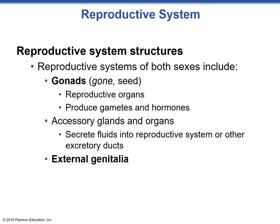Gametes are going to be a cell that has an incomplete number of chromosomes — a half cell. When the male and the female come together, they produce a fully functioning zygote that would eventually become a child. There are different accessory glands and organs involved in either sex that are going to secrete different fluids into the reproductive system or excretory ducts, or in many cases with the female, help maintain the overall environment of the uterus after fertilization. The external genitalia are simply going to be the main structures involved in coitus.